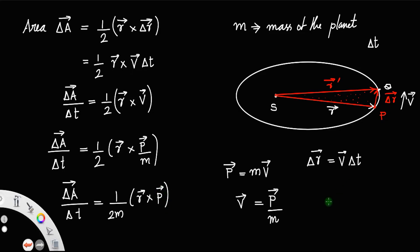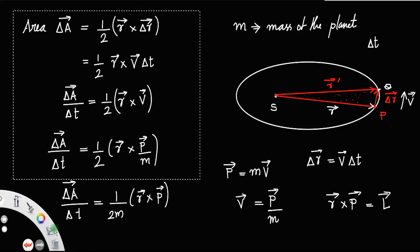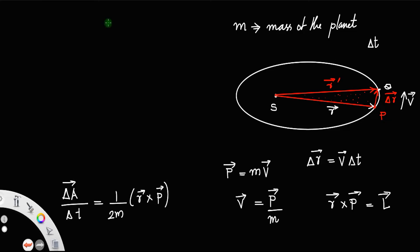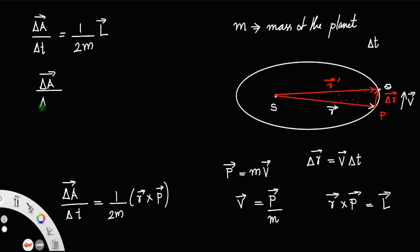R cross P is the vector called angular momentum, also called the moment of momentum. That is, R cross P equals L, the angular momentum. So delta A by delta T equals 1 over 2m times L, or equivalently L divided by 2m. Let us call this equation number 1.